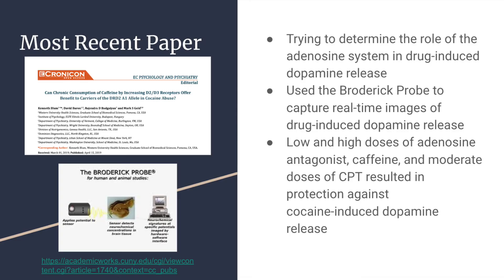The most recent paper that Dr. Gold was an author on is titled, 'Can Chronic Consumption of Caffeine by Increasing D2-D3 Receptors Offer Benefit to Carriers of the DRD2A1 Allele in Cocaine Abuse?' The experiment performed in this paper was an animal study trying to determine the role of the adenosine system, which is associated with the sleep-wake cycle, in the release of dopamine induced by cocaine. The Broderick Probe Biosensor was used to capture real-time images of the drug-induced surges of dopamine release. The experiment determined that with low and high doses of adenosine antagonist caffeine and moderate doses of CPT, protection against the cocaine-induced dopamine release occurred.